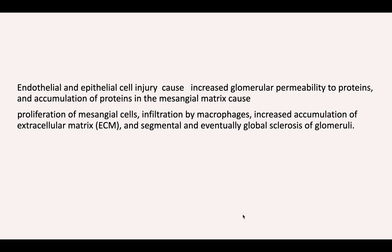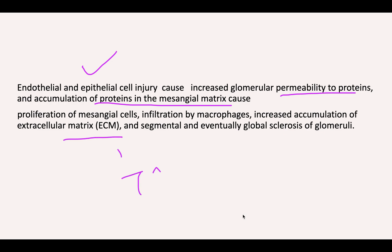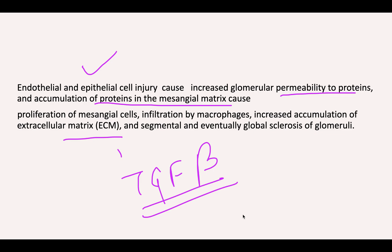Epithelial and endothelial injury causes increased permeability to proteins and accumulation of protein in the mesangium. This triggers proliferation of mesangial cells, macrophage infiltration, extracellular matrix deposition, and TGF-beta-mediated fibrosis — all leading to sclerosis in the glomeruli.